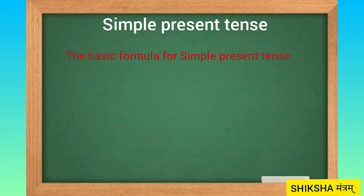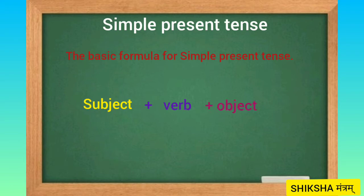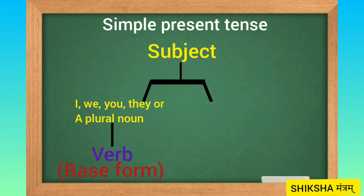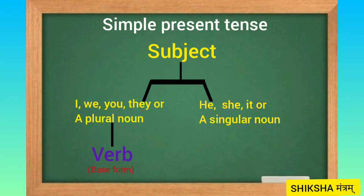Now let's see the basic formula for simple present tense: Subject plus verb plus object. If the subject is I, we, you, they, or a plural noun, we use the base form of the verb. And if the subject is he, she, it, or a singular noun, we add S, ES, or IES to the verb to make it singular.